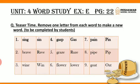Then Exercise E, teaser time: remove one letter from each word to make a new word. For example, number one is 'sing' — if you remove G, it becomes 'sin', a new word. Number two is 'brave' — I have removed B, so it becomes 'rave'. 'Wine' — I have removed E, so it becomes 'win'. Similarly I have done the rest of the words.